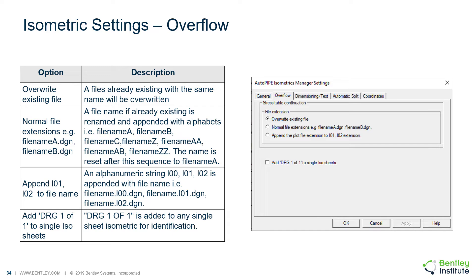Or you can choose to append the plot file extension to IO1, IO2 extension, where an alphanumeric string is appended with the file name. There's also a checkbox to add the drawing one of one text to single ISO sheets, so if there's only one drawing, we would still print that it's the first drawing of one.